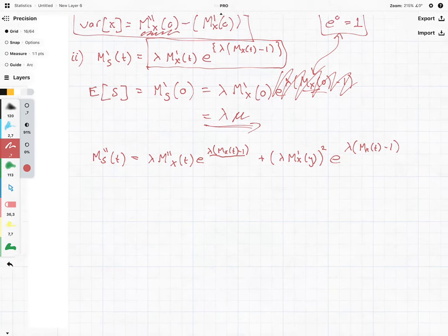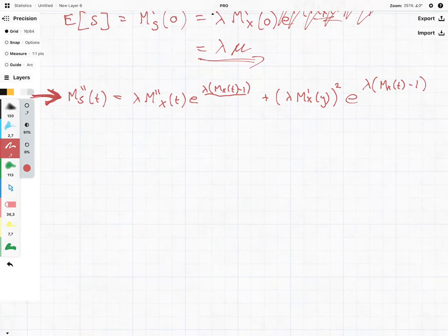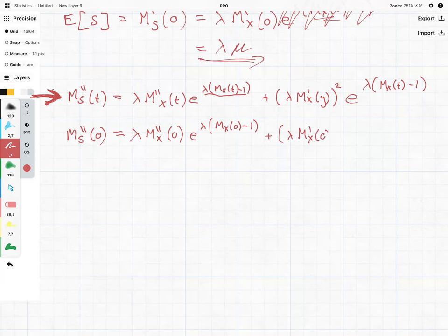And then we have e to the lambda Mx(t) minus 1. Like I say, if you are getting confused with this term here, it is because your maths is a little bit rusty. You need to look into some of, you know, differentiation and stuff like that. But it's not that difficult. It does get a little bit messy. Now again, you need to concentrate, because now we're setting this equal to 0.